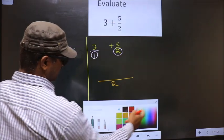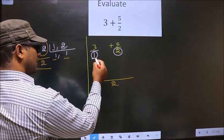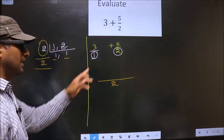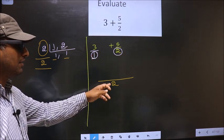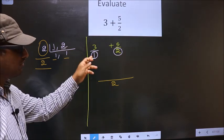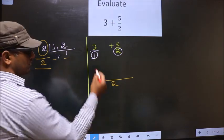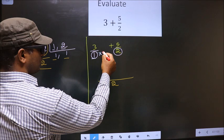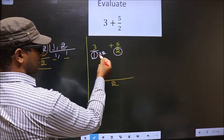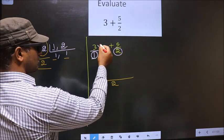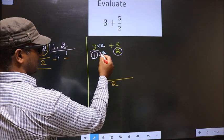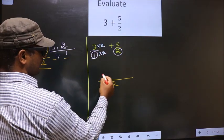Now, here the denominator is 1 and here we have 2. 1 should change to 2. For that to happen, we should multiply this by 2. Whatever number you are multiplying here, numerator also you should multiply by the same number. So 3 into 2 is 6. Plus symbol as it is.